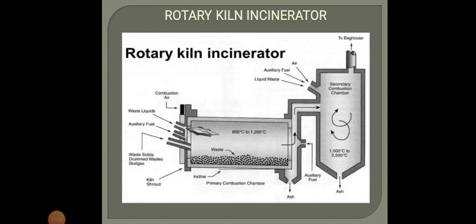Rotary kiln incinerators are used by municipalities and large industrial plants. This design has two chambers: a primary chamber and a secondary chamber. The primary chamber consists of an inclined refractory-lined cylindrical tube. The inner refractory lining serves as a sacrificial layer to protect the kiln structure and needs to be replaced from time to time. Movement of the cylinder on its axis facilitates movement of the waste — as the cylinder rotates, the waste moves through it.